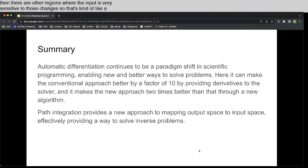All right, so in summary, automatic differentiation continues to be a paradigm shift in scientific programming. It is underlying all of machine learning today, but we can do many other things with it, including solving problems in new and better ways than we had in the past.